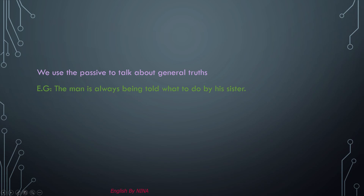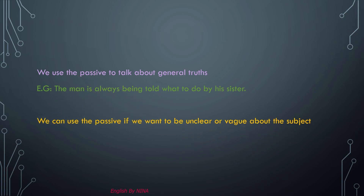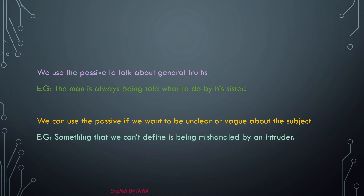If you want to know how to use 'by' in passive tenses, you can watch the previous videos about simple present passive. We can also use the passive if we want to be unclear or vague about the subject — for example: 'Something that we can't define is being mishandled by an intruder.'